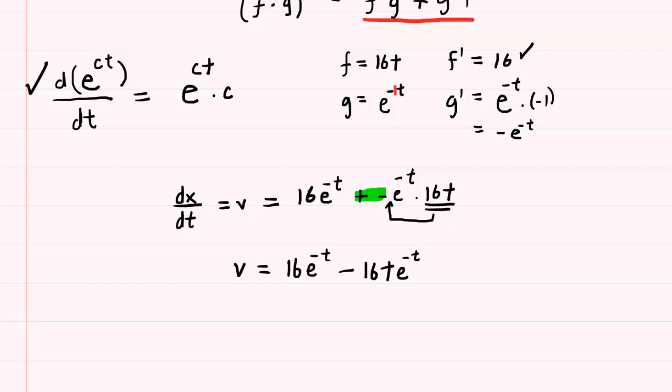Remember the question noted that the particle will momentarily stop, and we mentioned that means the velocity is equal to zero. So we're going to set this velocity equal to zero and try to solve for t.